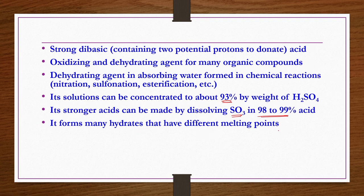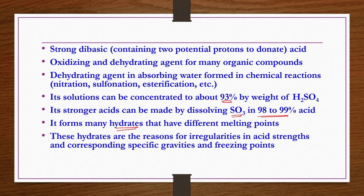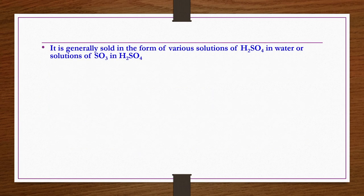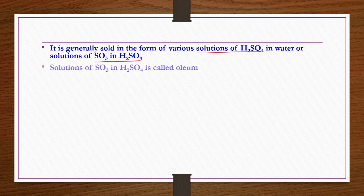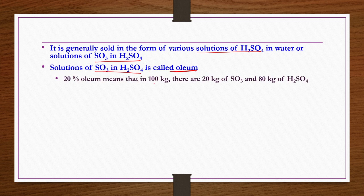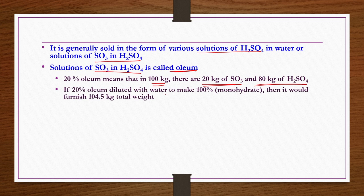H2SO4 solution can be concentrated to about 93% by weight. Stronger acids can be made by dissolving SO3 in 98–99% H2SO4. It forms hydrates with different melting points; common grades include 63%, 90%, and 98% H2SO4. When 20% oleum is diluted with water to make 100% monohydrate sulphuric acid, it furnishes 104 kg total weight. These hydrates cause irregularities in acid strength, corresponding specific gravities, and freezing points.